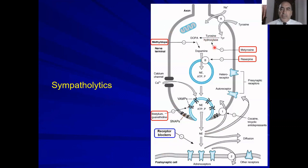To remember the first class — drugs that inhibit noradrenergic transmission — you have to remember noradrenergic neurotransmission and the synthesis of norepinephrine. Tyrosine is converted into DOPA, and DOPA into dopamine, then dopamine to norepinephrine, which is stored and then released. The enzyme tyrosine hydroxylase is inhibited by the drug metyrosine.